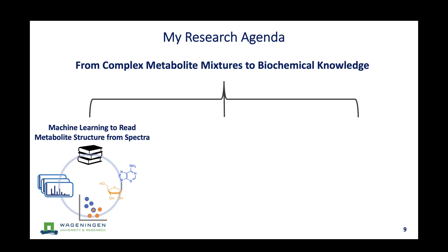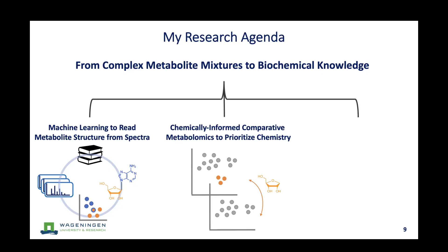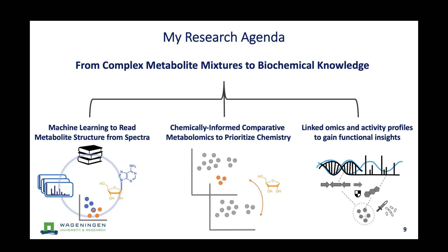My research vision is to close the gap between what we can see in metabolomics — all the spectra — and what we can actually learn from it. We have three research pillars: machine learning to read metabolite structure from spectra; chemically informed comparative metabolomics to prioritize chemistry; and linking metabolomics to other data types such as genomics to gain more functional insight.